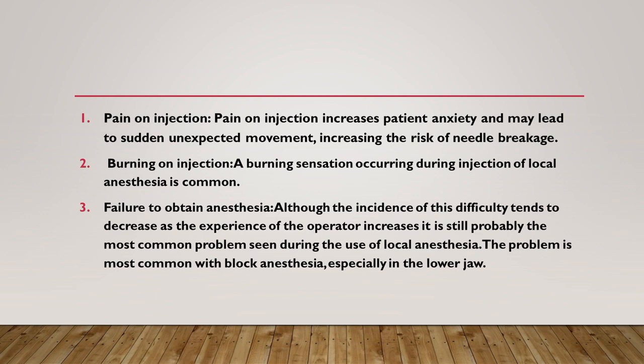After trismus with limited mouth opening, it is difficult to use the conventional technique of inferior nerve block. Infection and inflammation of the pulp cause low pH, which affects the effectiveness of anesthesia in that area, and inflammation makes the nerve more sensitive to pain. Additionally, psychological causes such as fear and anxiety can cause failure in obtaining local anesthesia.